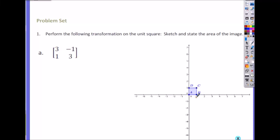Perform the following transformation on the unit square: sketch and state the area of the image. But this one should look familiar to you, right? What is A? Three. What is B? One. Remember this is A, A, B, negative one.